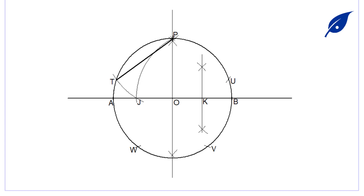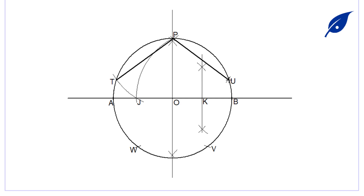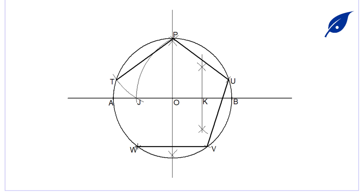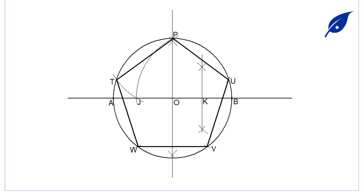We now have the pentagon P, T, U, V, W. The next thing is to draw the lines connecting P to T, P to U, U to V, V to W, and W to T, which gives us our pentagon. Thank you for watching this tutorial.